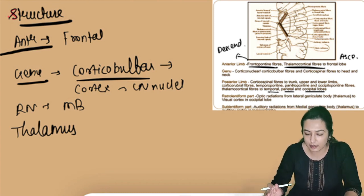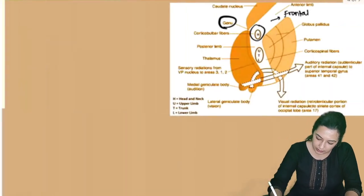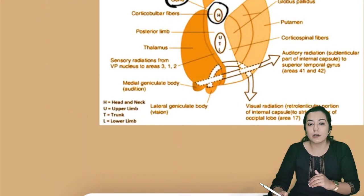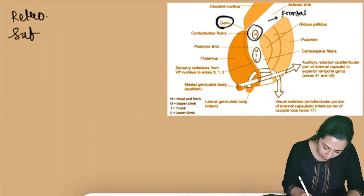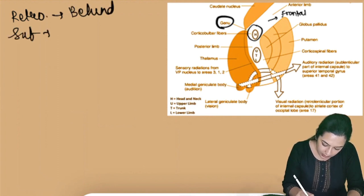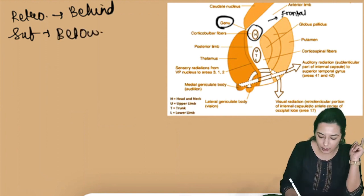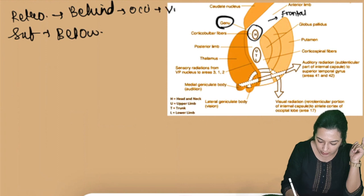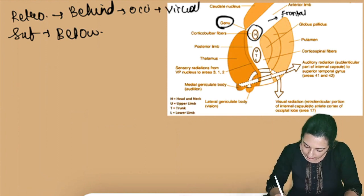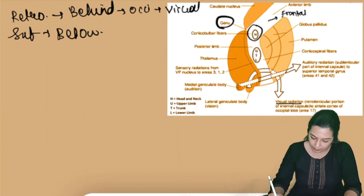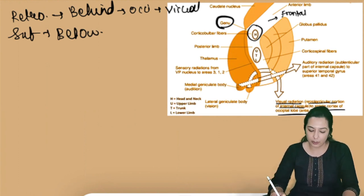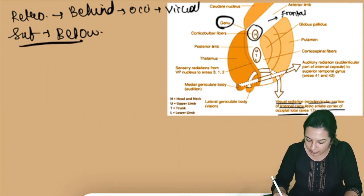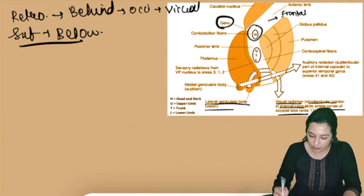There is also the retrolentiform and sublentiform portion. 'Retro' means behind, so the retrolentiform portion is behind the lentiform nucleus. Behind is the occipital lobe, which is mainly the visual cortex, so visual radiations pass through the retrolentiform portion of the internal capsule to the striate cortex of the occipital lobe.